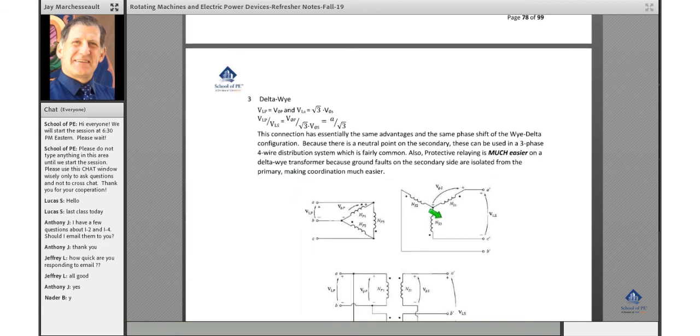Has similar advantages to the Y delta one above. Now there's a neutral point on the secondary side, which can be used in a three-phase four-wire distribution system. You can't do that with a delta. If you had a power transformer at your substation and the secondary was a delta, you wouldn't have a connection point for your fourth wire, which is your neutral wire.